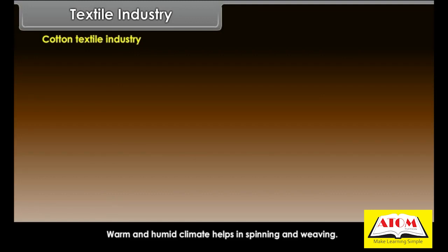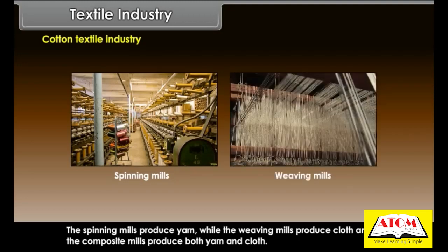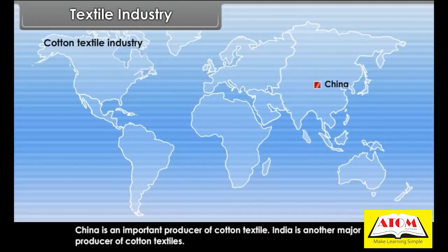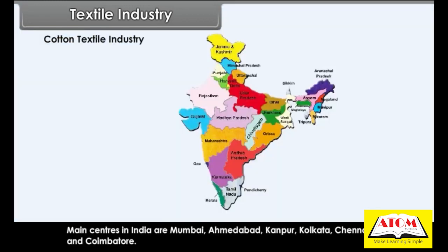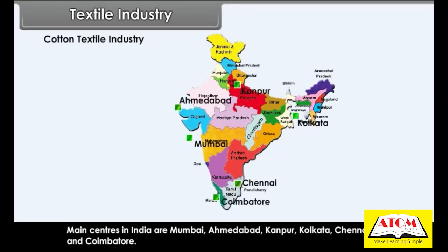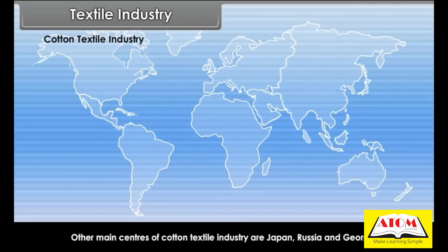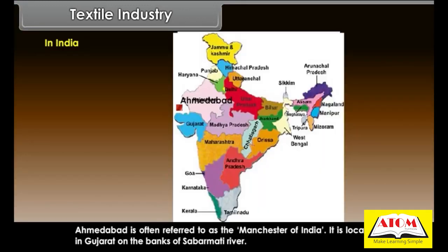Cotton textile is an important agro-based industry. Warm and humid climate helps in spinning and weaving. Spinning mills produce yarn, weaving mills produce cloth, and composite mills produce both. China is an important producer of cotton textile; India is another major producer, with main centres at Mumbai, Ahmedabad, Kanpur, Kolkata, Chennai, and Coimbatore. Other main centres are Japan, Russia, and Georgia.